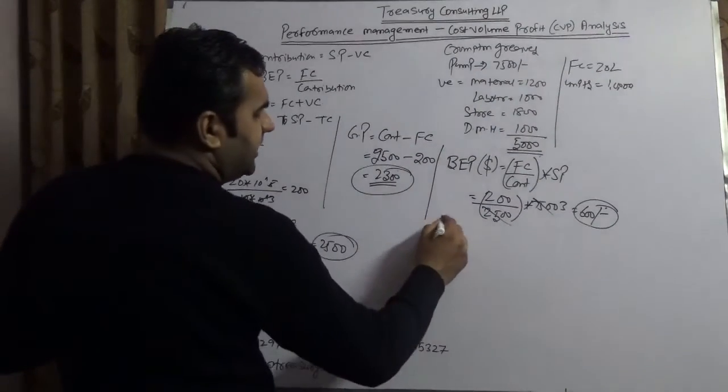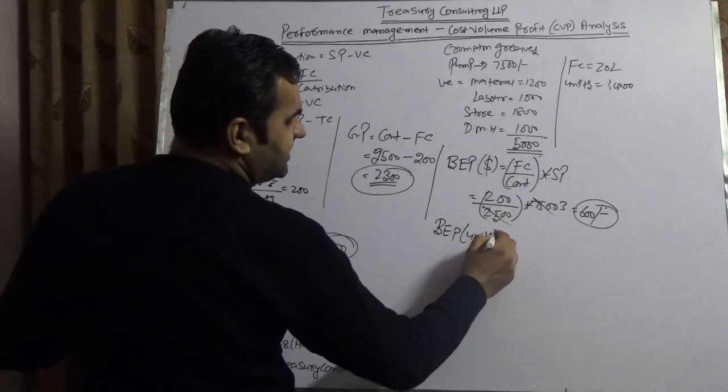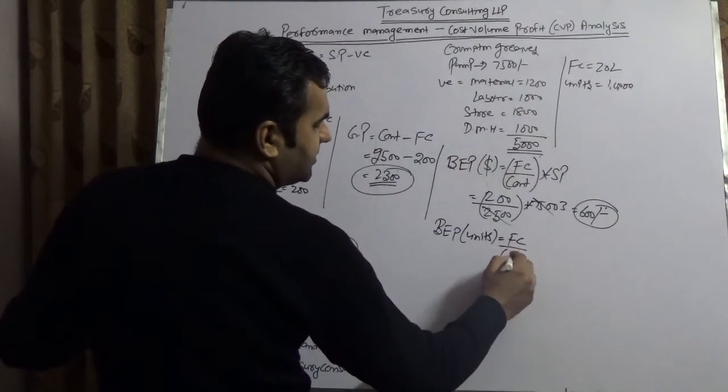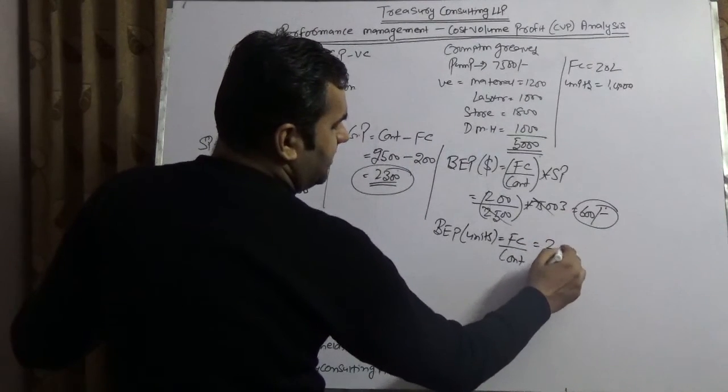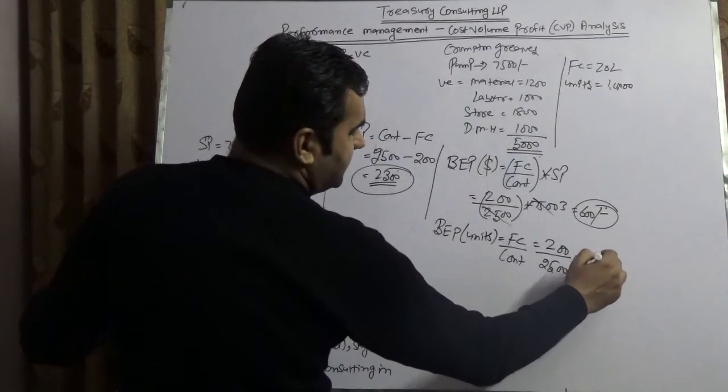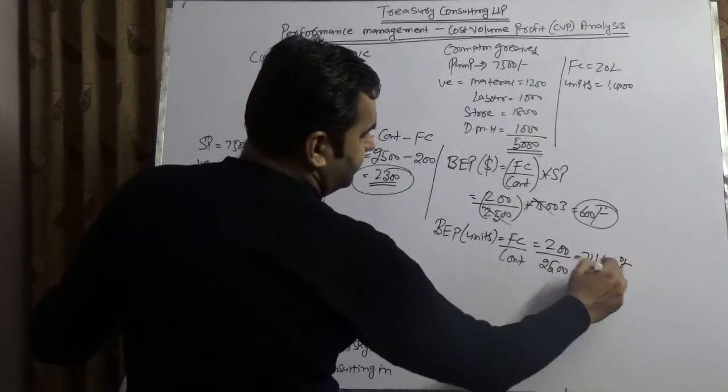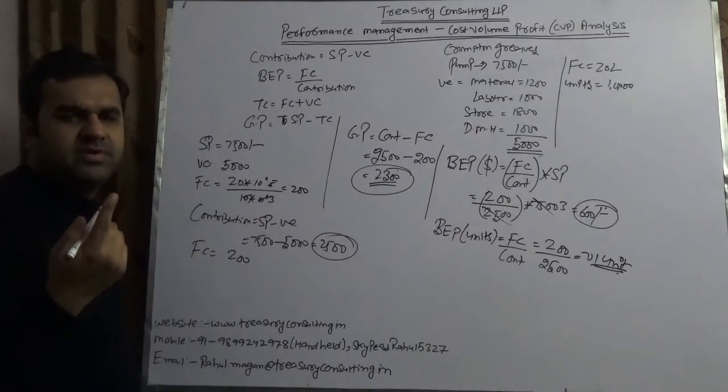If we calculate in unit terms, we use the same formula. Here it would be fixed cost by contribution. Fixed cost is $200 per piece, contribution is $2,500, which is approximately 0.08 units. So if they produce one unit, they would be able to recover their fixed cost.